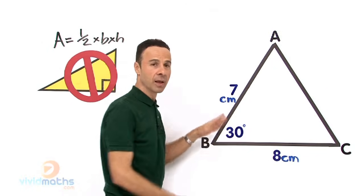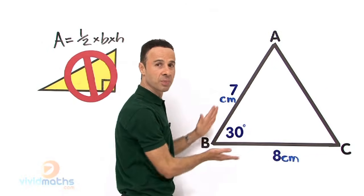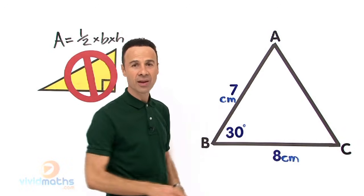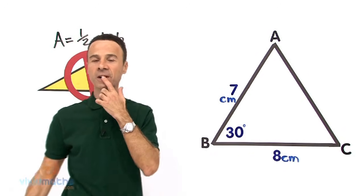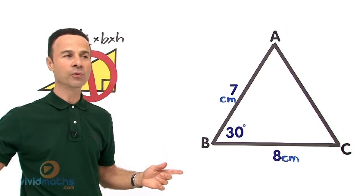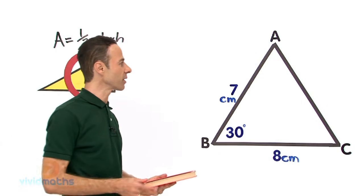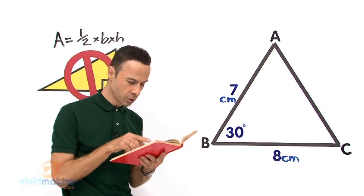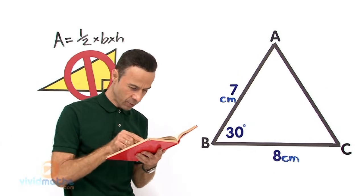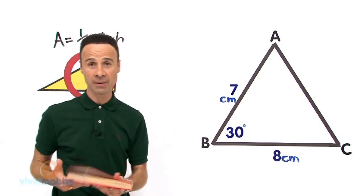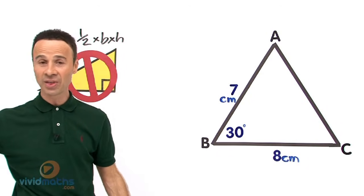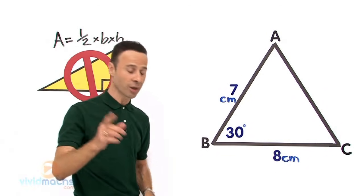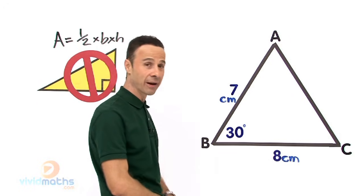We are given an angle and two lengths between it, and this angle is kind of cozy in there. There is a new formula — the area of a non-right angle triangle. I am going to give you that formula now. It is a fabulous formula — a new tool that we can use to find areas.